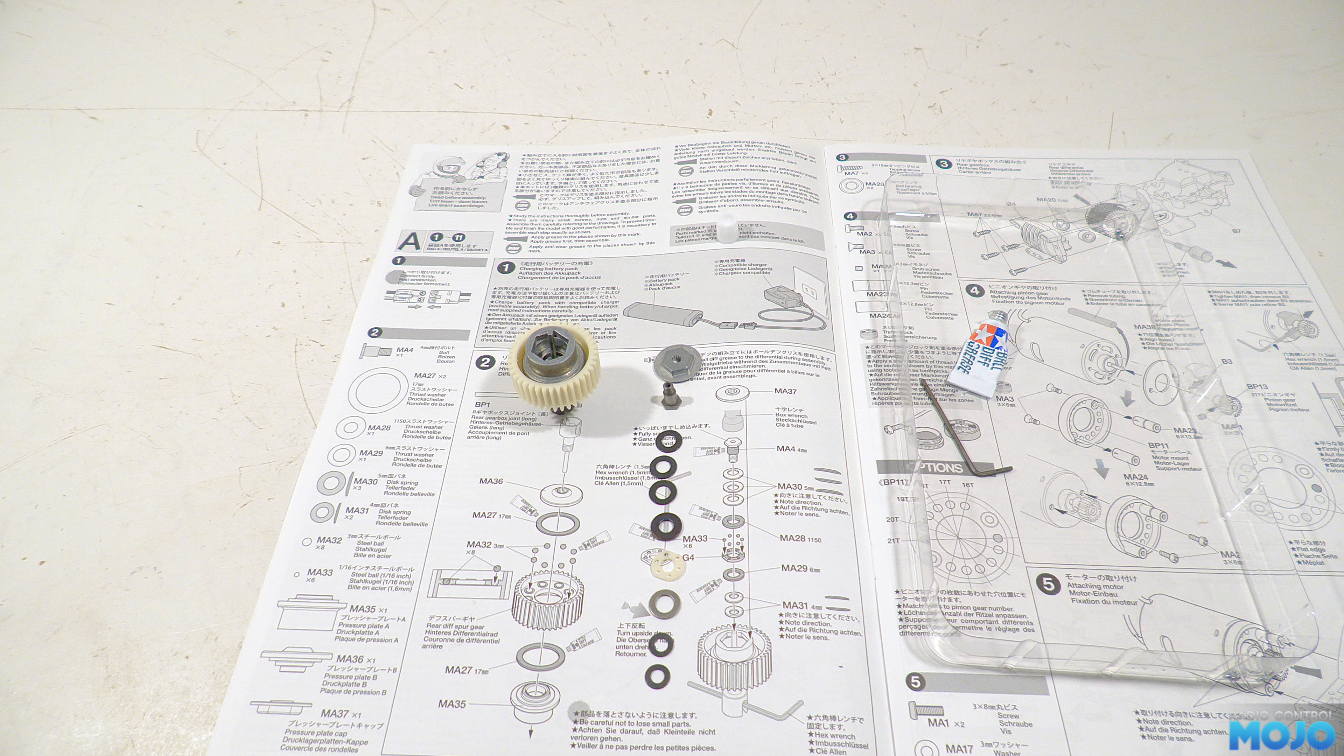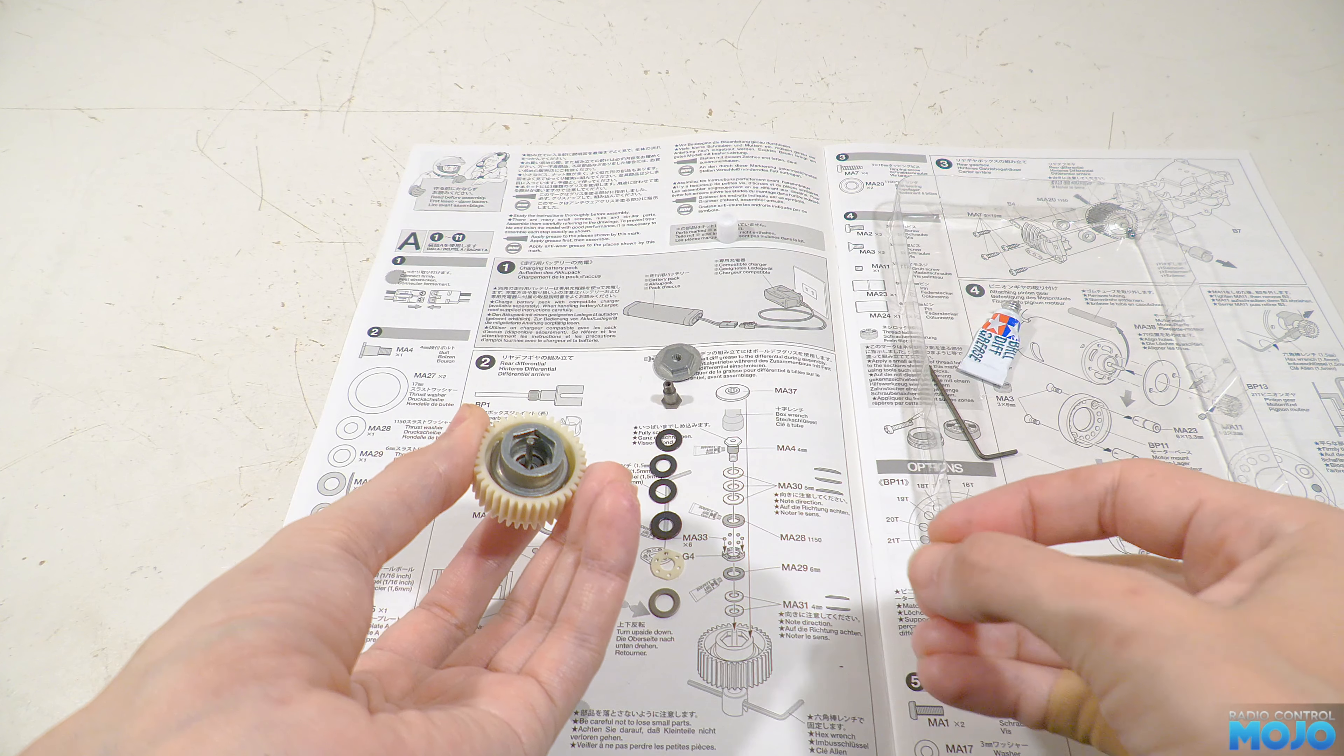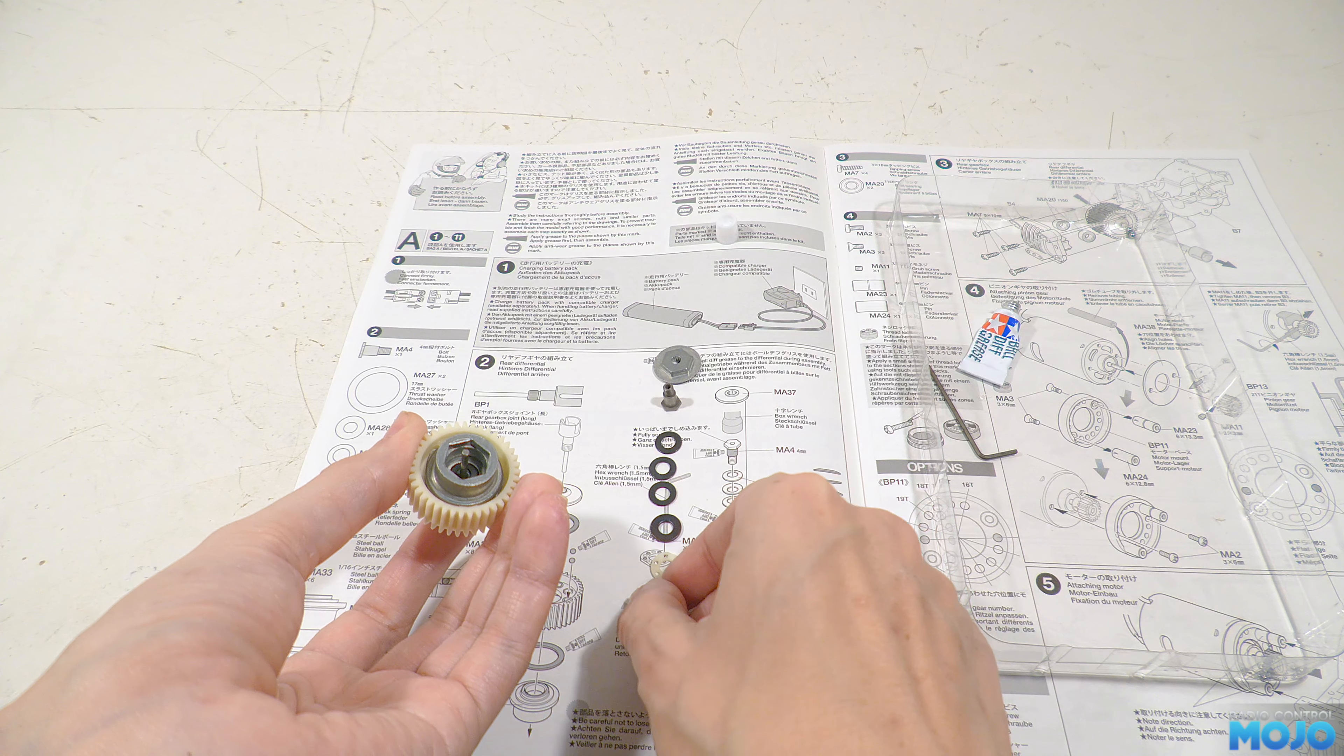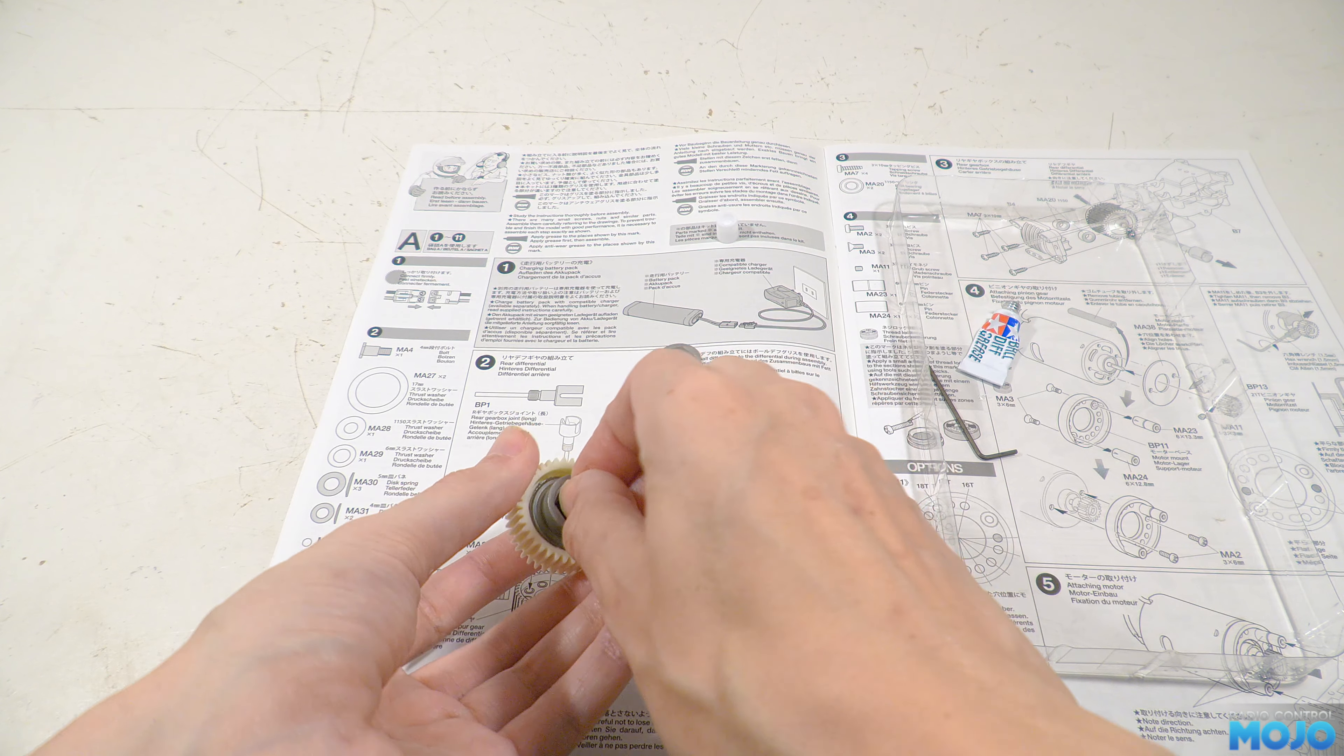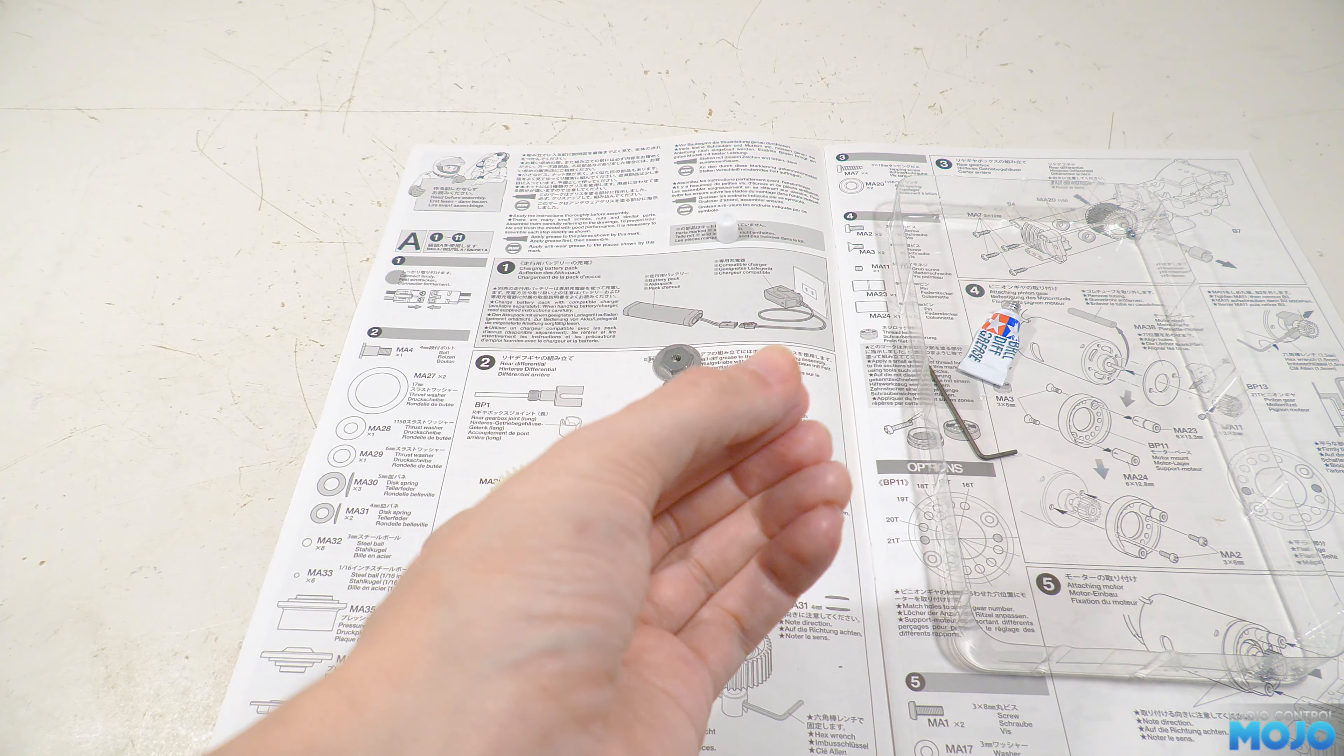With the diff gear flipped over so it sat on the drive cup, we can start by dropping in the two small disc springs. Keep in mind that it's absolutely critical with these and the larger ones that they go in the right way. There's a little diagram that shows which way up to fit them. If one goes in upside down, they're not going to act as springs and the tension won't be correct, making the diff slip, causing damage. So triple check and make sure you've got them right.